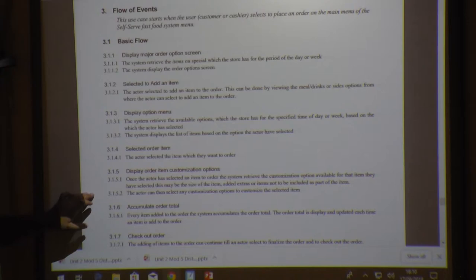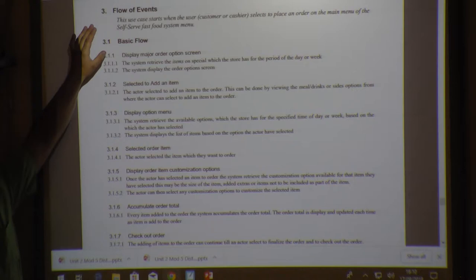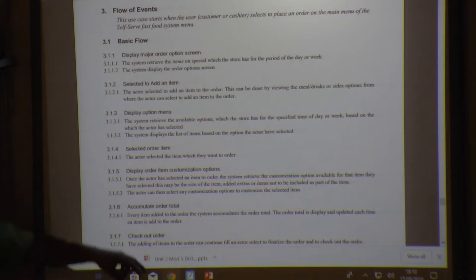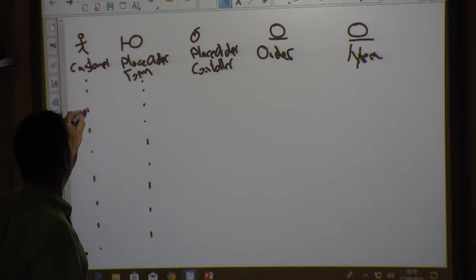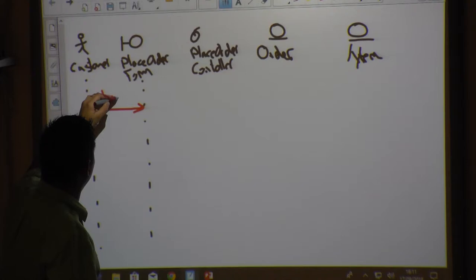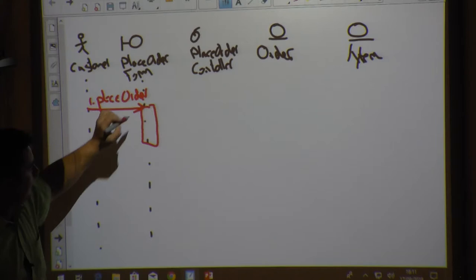You see here at the beginning in step 3, it says this use case starts when the user, the customer or cashier, selects to place an order on the main menu of the self-serve fast food menu. So what are we seeing? Who is doing that? The customer. On what is he interacting? So what is he doing? He's placing the order and now again we're going to have this focus of that event occurrence or focus execution occurrence block. Now what is happening next?